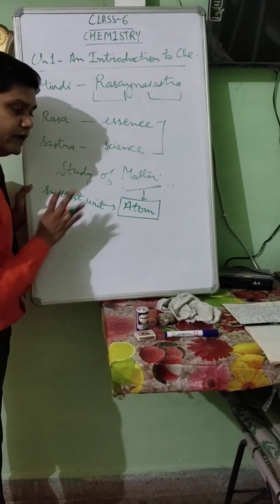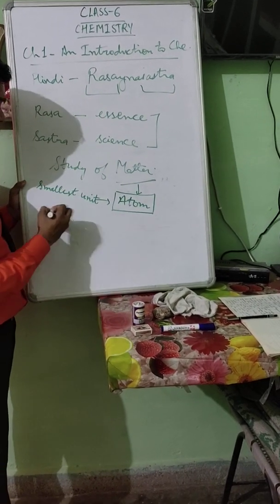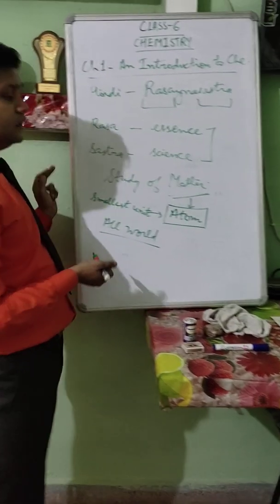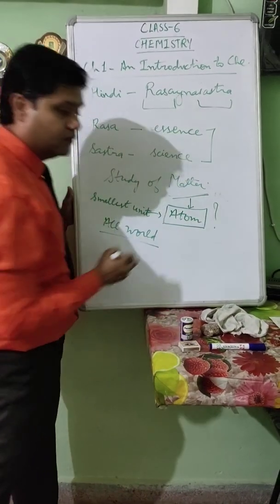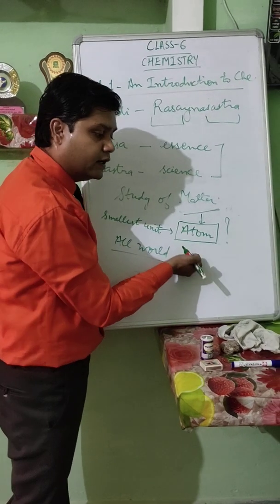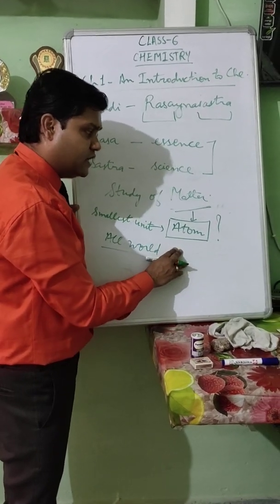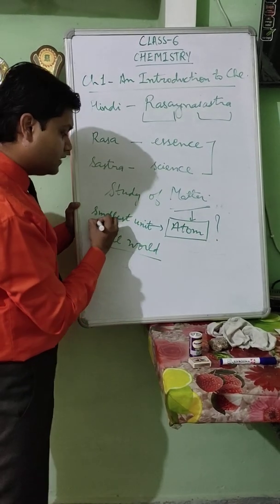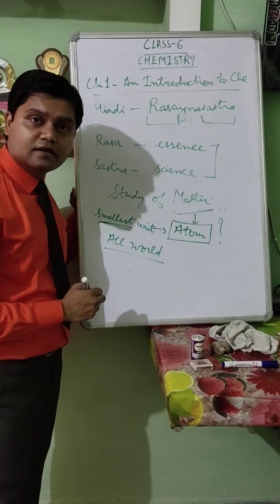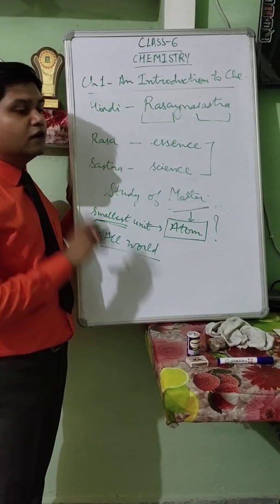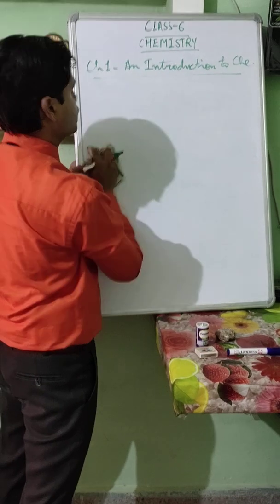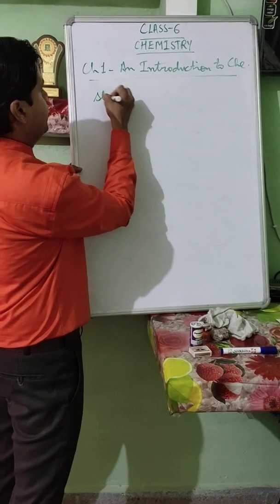Nothing is smaller than an Atom. All the world is a part of Chemistry in one way or the other. The question arises: what is an Atom, where does it exist, and where does it come from? According to definition, Atom is the smallest particle which cannot be further divided. For more clarity, we will study the structure of the Atom, because without it we cannot proceed in Chemistry.